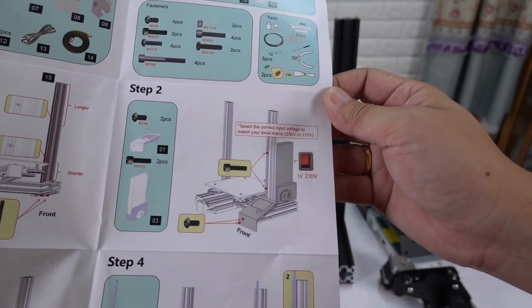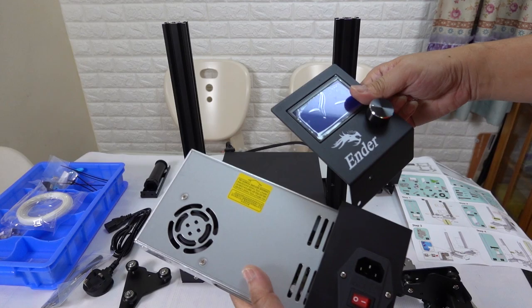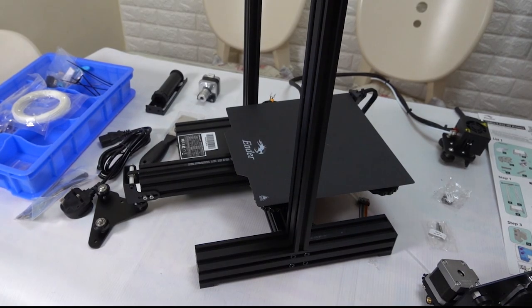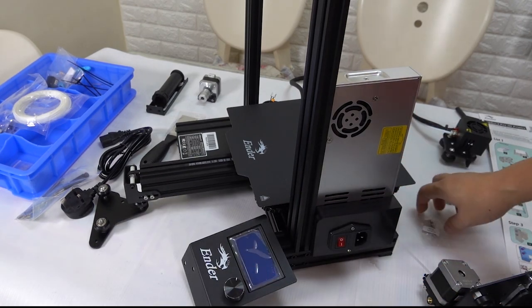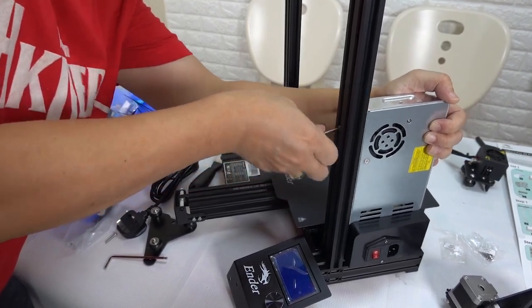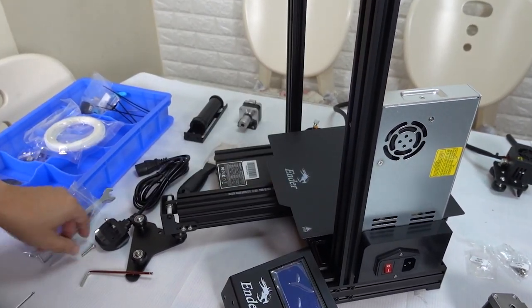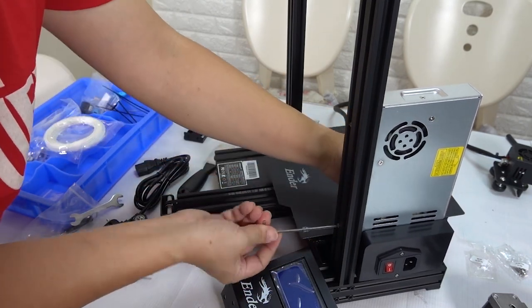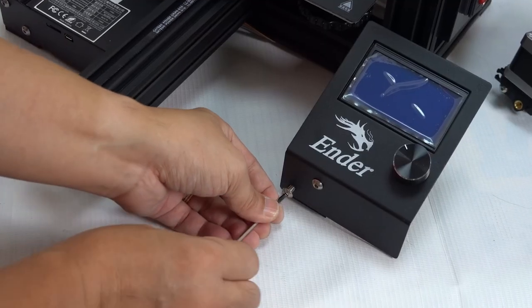The second step is to install the transformer and the control board. For screws, you need M5x8 and M4x20. Carlos has some experience in installing screws. Just twist in the top one, but don't tighten it. Just let the part hang on the top screw. And then twist into the bottom one. Finally, tighten both. Use the same method to work on the panel.